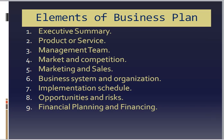The elements of a business plan are: executive summary, product or service, management team, market and competition — what market is there and who the competitors are — marketing and sales — how sales will happen and what the sales strategies are — business system and organization — what is the business system and what is the organization structure, whether it's functional or divisional.